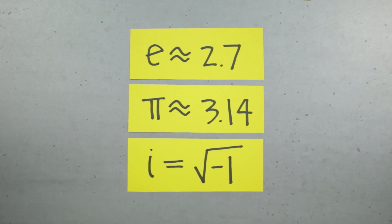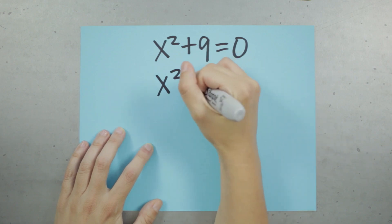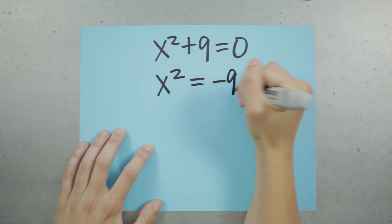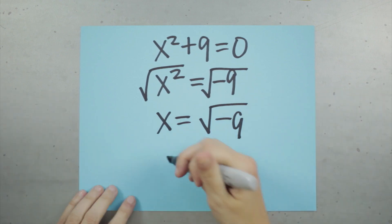Now you might be thinking, since when are we allowed to take the square root of a negative number? Exactly. Hundreds of years ago, before the imaginary number, we had no way to deal with square roots of negative numbers. If somebody was trying to work out the answer to a problem, and they got to the square root of a negative number, they were just like, well, guess we're going to have to stop there.